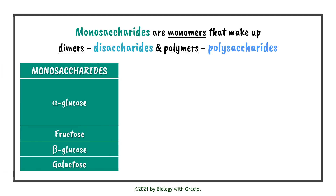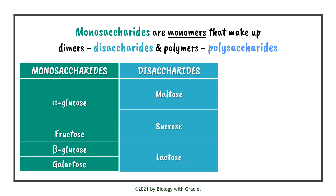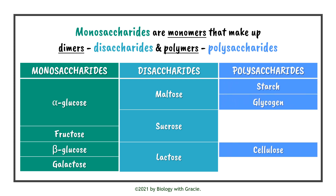Examples of monosaccharides are alpha glucose, fructose, beta glucose and galactose. Two alpha glucose monosaccharides make up the disaccharide maltose. Alpha glucose and fructose make up the disaccharide sucrose. And beta glucose and galactose make up the disaccharide lactose. For the polysaccharides, alpha glucose makes up starch and glycogen, and beta glucose makes up cellulose.